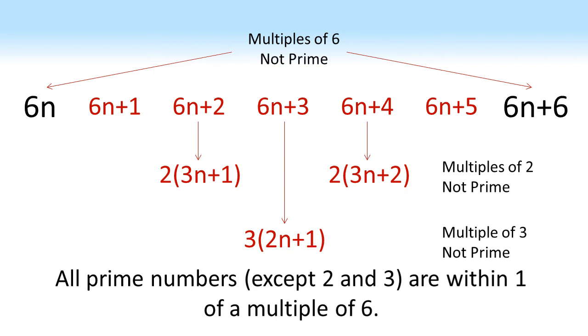Hence, we've proved our statement. All prime numbers except for 2 and 3 are within one of a multiple of 6.